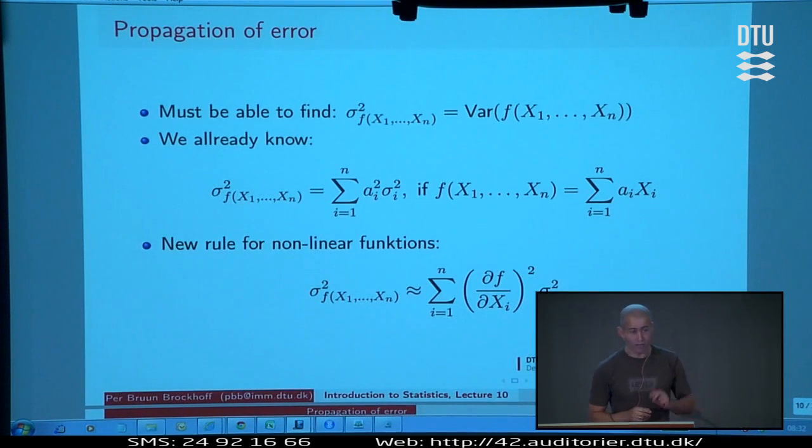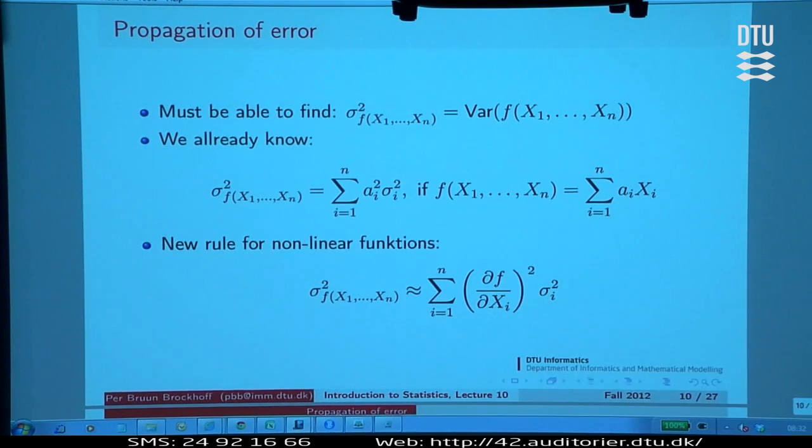The general way of expressing this, putting this thinking into math and formulas, looks like this. I'm stating that the challenge we are facing when we are talking about propagation of error is this one. The challenge is that we would like to know the variability, the variance of some potentially nonlinear function of many individual items that could come in with each their noise term or error term, their variance.